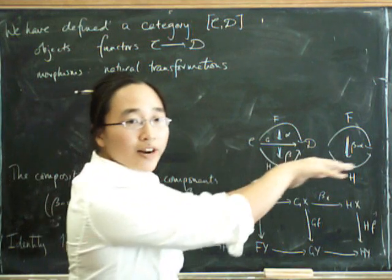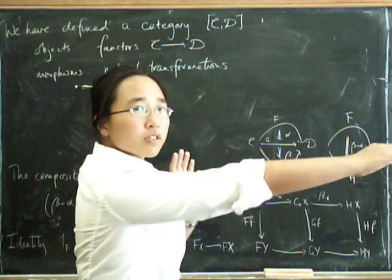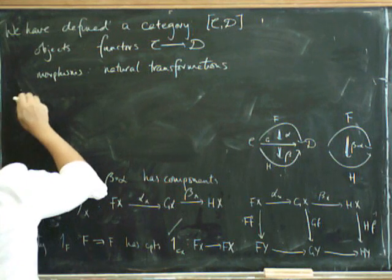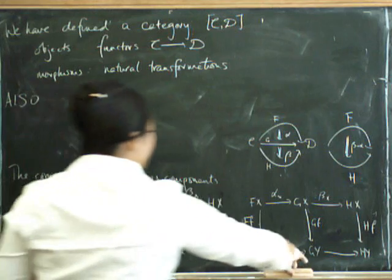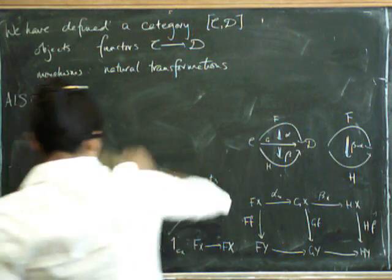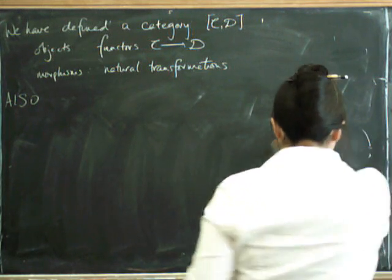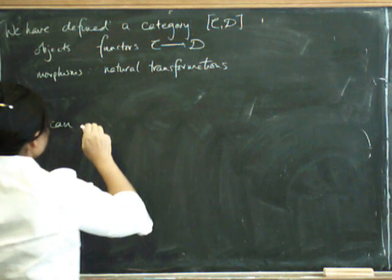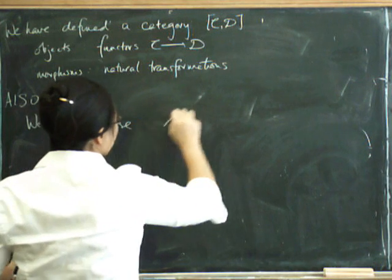we can compose functors in this direction along the board. So what happens to the natural transformations if we compose functors along this direction? So this is a whole new thing. Let's get rid of something, maybe all of it.